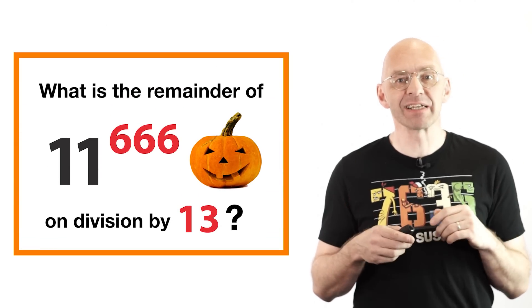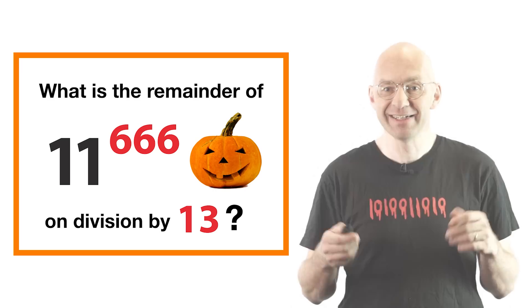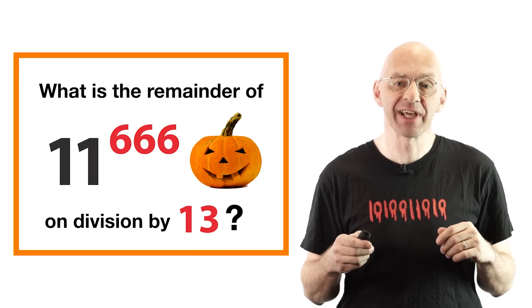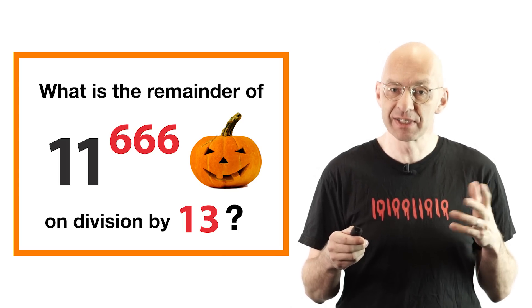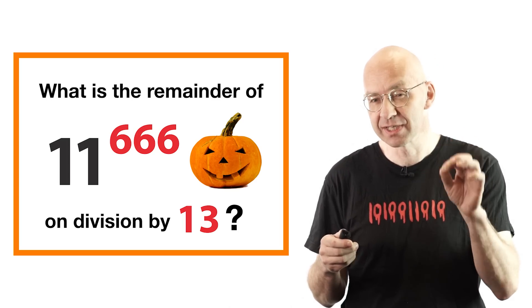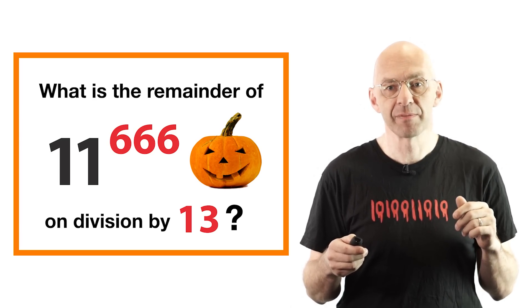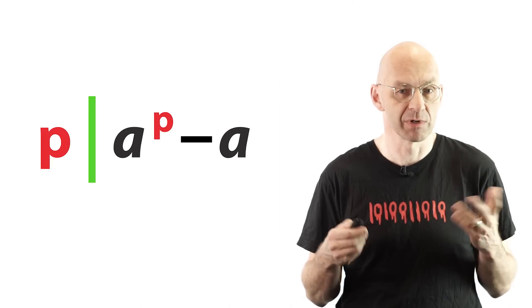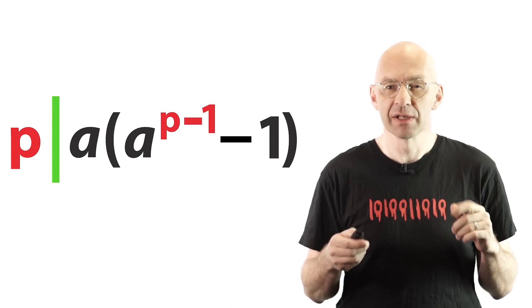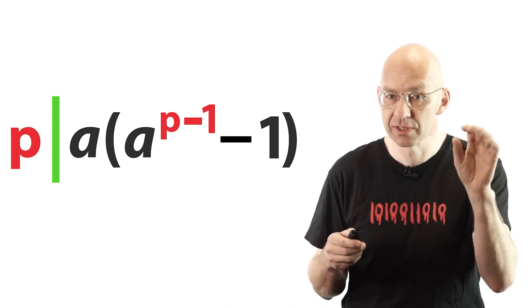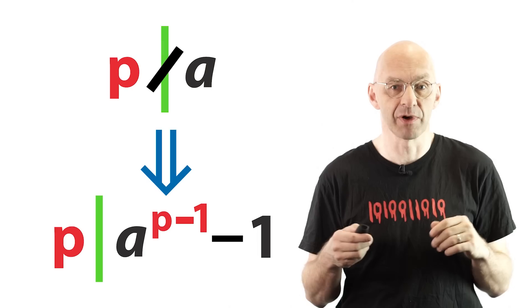Now for our second Fermat little theorem application and time for yet another t-shirt. Tada! Okay, finally to get into the Halloween spirit let me show you how you can figure out by hand what the remainder is when you divide the seriously monstrous number 11 to the power of 666 by the unlucky prime 13. For this we need to recast Fermat little theorem into the form that appears in Bender's head. What do we do? Well we first take the common factor a out of the difference like that. This shows that if the prime p does not divide the first factor, our integer a, then it must divide the second factor. Right? Pretty obvious.